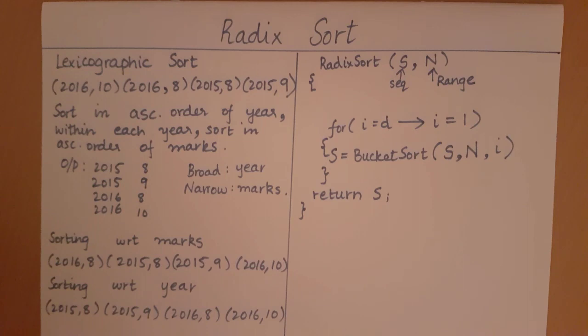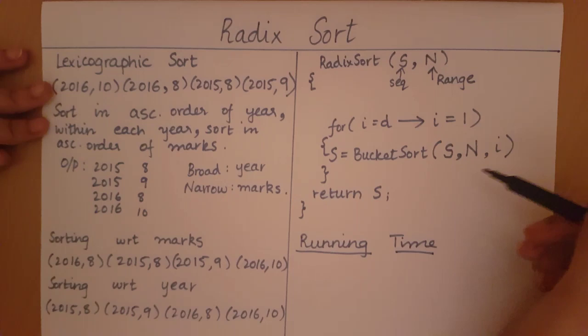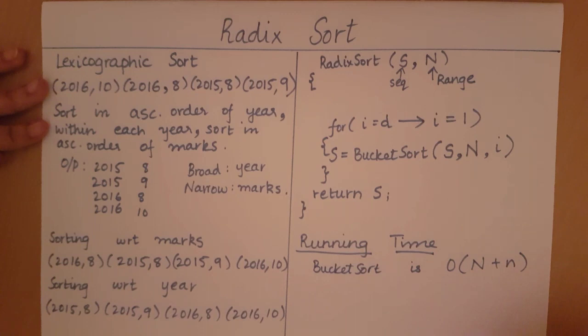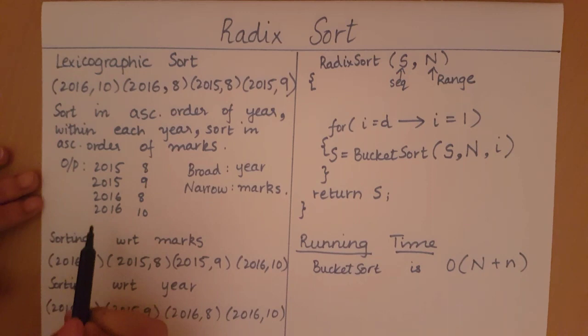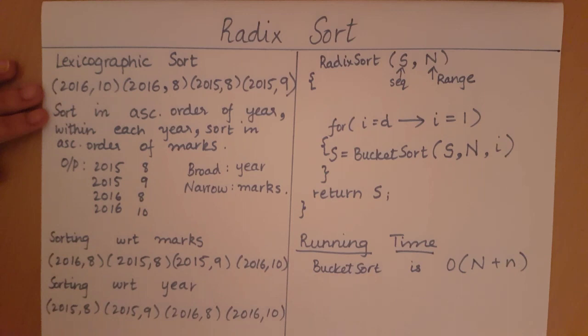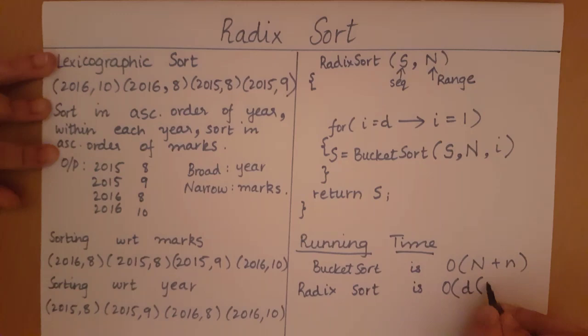How do we analyze the running time for radix sort? Bucket sort is O(N + n), where N is the range and n is the number of tuples. We call bucket sort D times — once per dimension. So the complexity of radix sort is O(D * (N + n)).